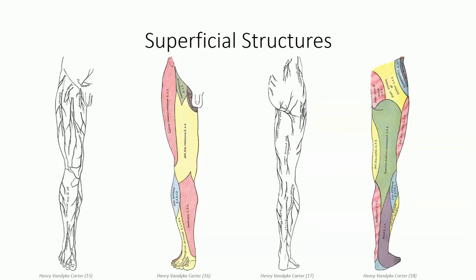We finish off this topic by revisiting the cutaneous nerve distribution to the thigh. A series of nerve branches known collectively as the anterior femoral cutaneous nerves project off the femoral nerve and supply the skin along the anteromedial surface of the thigh. A small cutaneous branch from the obturator nerve supplies a small patch of skin along the medial surface as well. The posterior femoral cutaneous branch is a distinct branch off the lumbosacral plexus that courses medially next to the deeper running sciatic nerve, supplying the skin along the posterior aspect of the thigh.